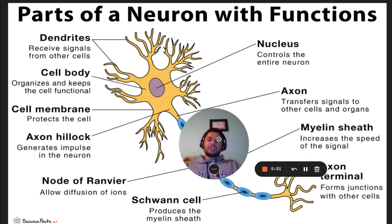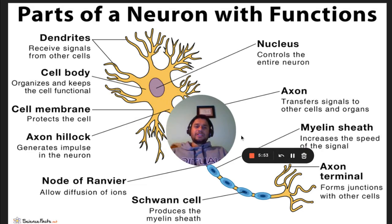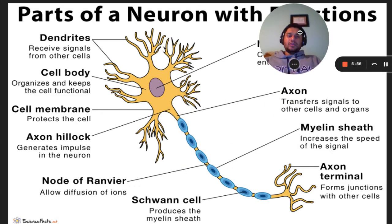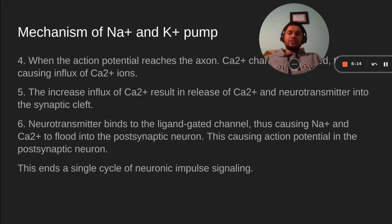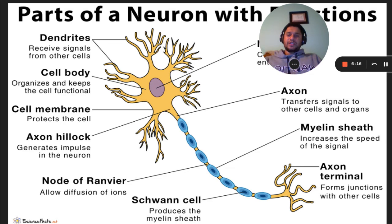This is the part of a neuron with its functions. The nucleus controls the neuron. Dendrites receive signals. The cell body organizes and keeps the cell functional. The cell membrane protects the cell. The axon hillock is the threshold necessary for an impulse to be sent. The Node of Ranvier allows diffusion of ions. The Schwann cell produces the myelin sheath, which increases the speed of the signal.